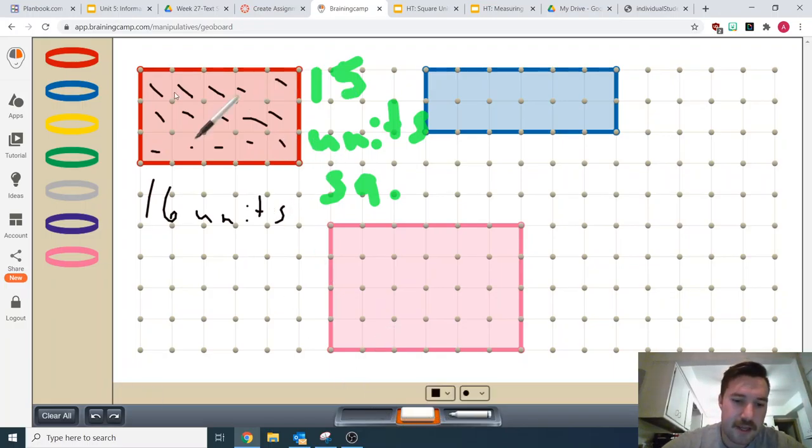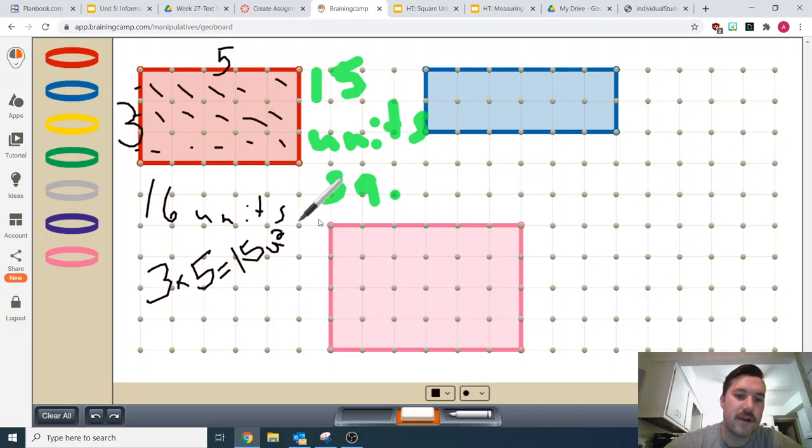I could also, to find the area, have multiplied the length. So our length here is 1, 2, 3. So my length is 3, and I could multiply that by the width. 1, 2, 3, 4, 5. So I could have multiplied 3 times 5, and that will give me 15. 15, U stands for units, and then I'm going to put a little 2 up here. That stands for units squared. So 1 square unit would be like 1 of these squares.